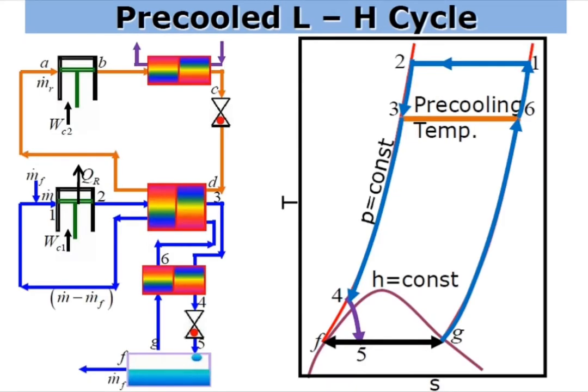We need to see how we can represent the processes on a T-S diagram. Process 1 to 2 represents a compression process under constant temperature condition performed in compressor WC1. Process 2 to 3 represents the pre-cooling operation, performed with the help of the pre-cooling heat exchanger. The temperature achieved after pre-cooling is known as the pre-cooling temperature, which is an important parameter for determining yield. To get the maximum result we need to reduce the pre-cooling temperature as low as possible, which depends on the properties of the refrigerant circulating through the pre-cooling cycle.